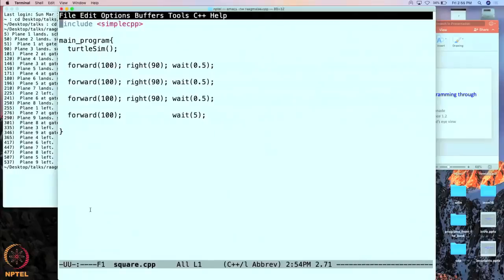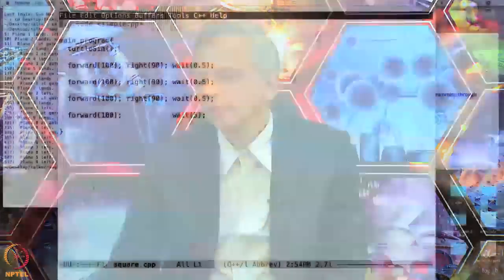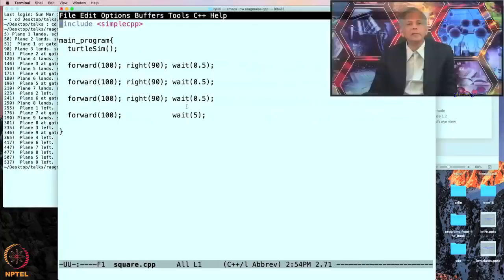So now I am going to show you exactly how this happens. And I am going to use the SimpleCPP library and I will compile the program for you. So here is the program that I showed you earlier. This program is slightly different. So you had seen that there was a wait 5 seconds at the end of the program. But here I have also put in these additional waits.